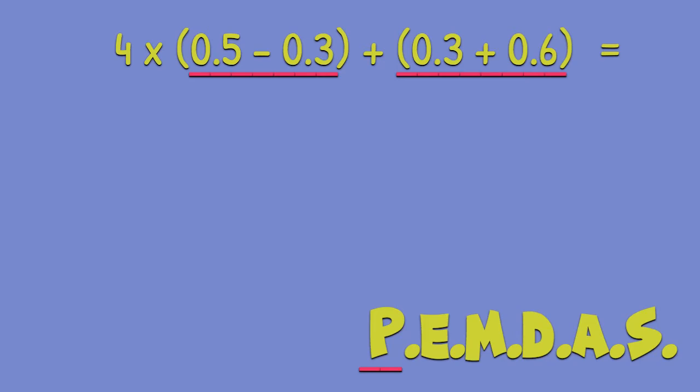5 tenths take away 3 tenths is 2 tenths and 3 tenths plus 6 tenths is 9 tenths. Quite simple.